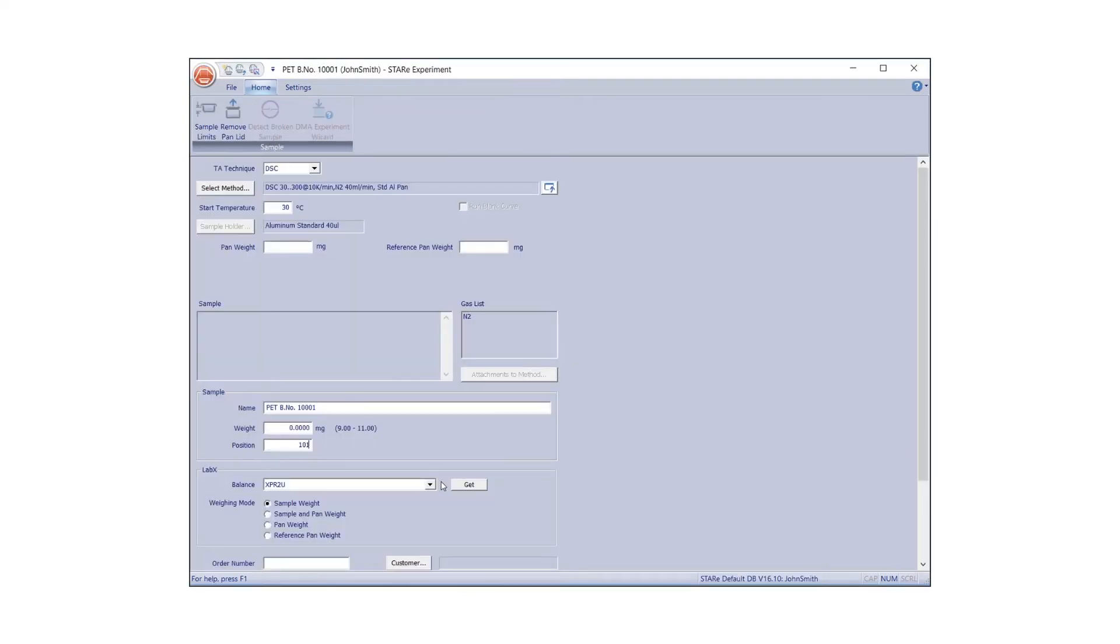Then, in the Experiment Editor, select your desired LabX balance from the drop-down list and choose one of the four weighing modes displayed below. These include sample weight, sample and pan weight, pan weight, and reference pan weight. Click Get to start the weighing procedure.